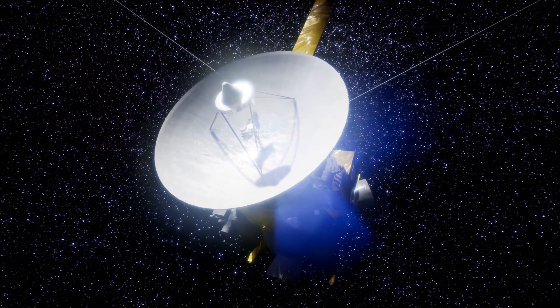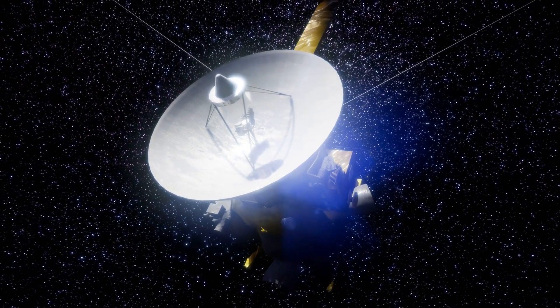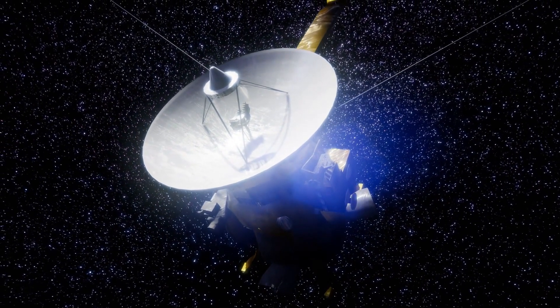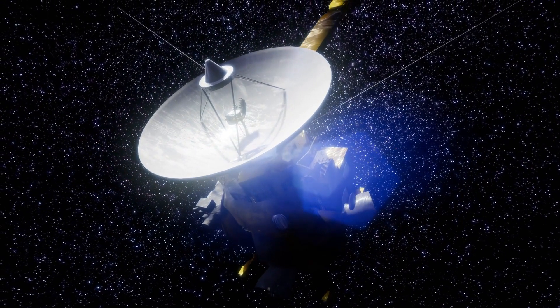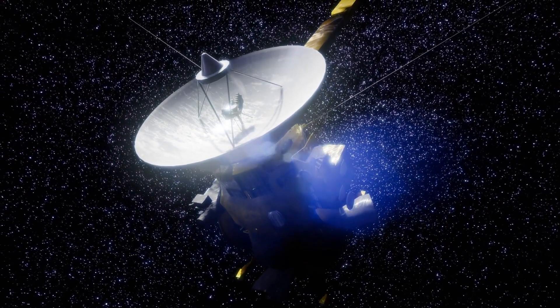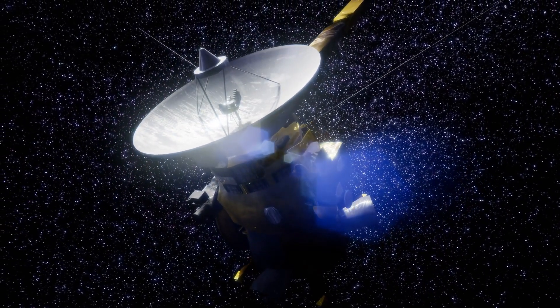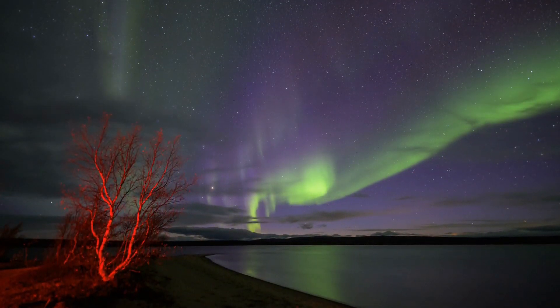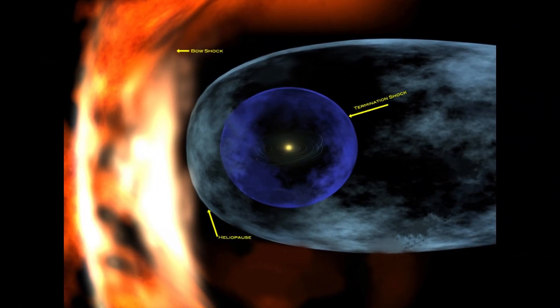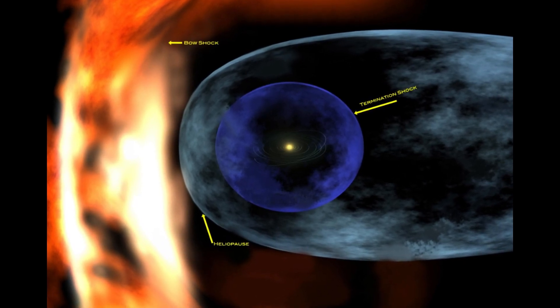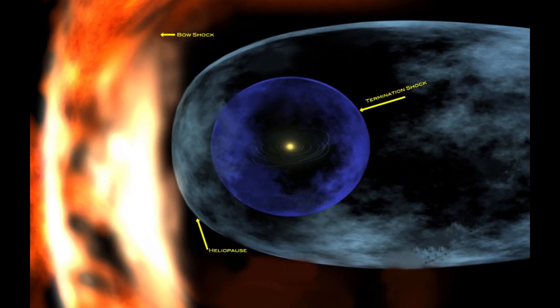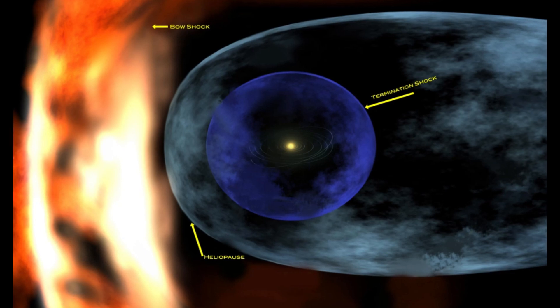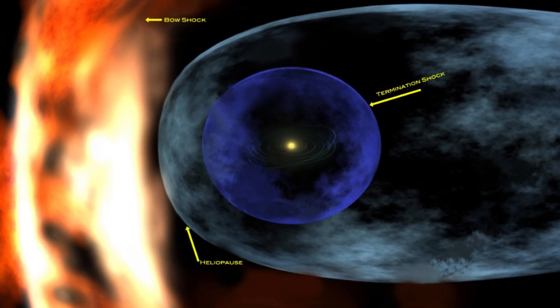As Voyager 1 and Voyager 2 traveled to the edges of the solar system, they found these strange cosmic rays, which were particles that didn't seem to follow the usual patterns of cosmic radiation. These rays came from the solar wind interacting with the interstellar medium. They gave us important information about how things move at the edge of the heliosphere, the sun's protected bubble.